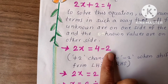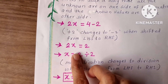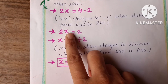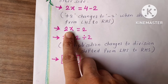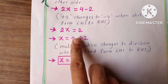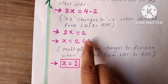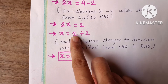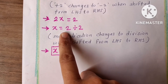See here: plus converted into minus, so 2x is equal to 4 minus 2, which gives 2x is equal to 2. Since 2x means 2 multiplied by x, and multiplication shifts to the other side converting into division, 2 is divided by 2. So the answer is x is equal to 1, because 2 divided by 2 is 1.